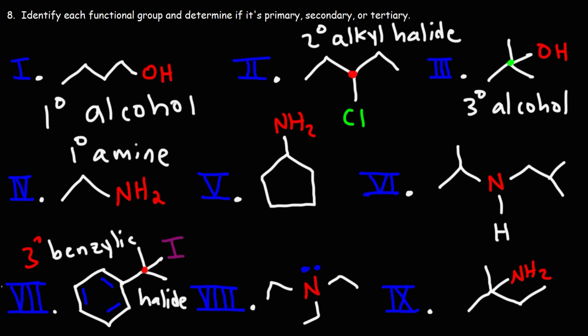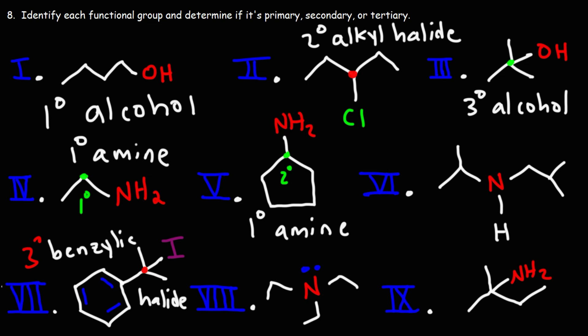What about number five — is it primary, secondary, or tertiary? If we focus on the carbon atom here, this carbon is primary and this carbon is secondary. However, we don't have a secondary amine; we have a primary amine. For amines, the rules are different. For alcohols and alkyl halides, it depends on the carbon to which the halogen or hydroxyl group is attached. For amines, you don't look at the carbon atom — you look at the nitrogen atom. The nitrogen here is attached to only one carbon atom, which is why this is a primary amine.